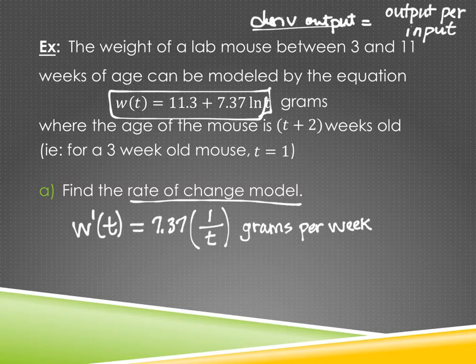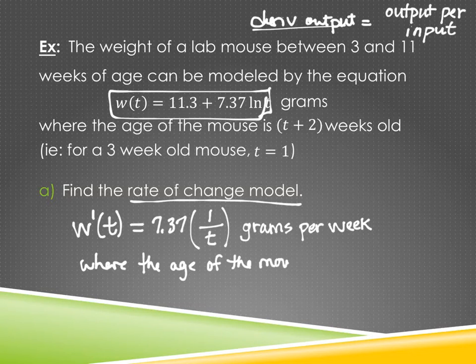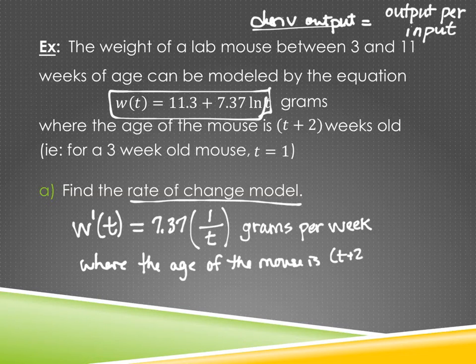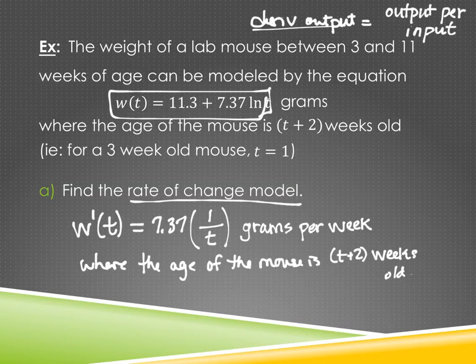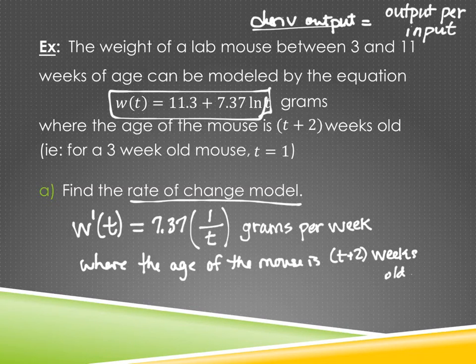And then we have to say the same thing that we already said. That part doesn't change. That's kind of the cool thing is whatever it said next will just be repeated. What did it say? Where the age of the mouse is T plus 2 weeks old. And hearkening back to what we did last time with graphs, remember I told you that whatever the output or the input looked like on the graph, whatever your X values were, they were also going to be on your derivative graph. The same thing's going on here. Your input, your units and everything, all the values stay the same on your X values. So the notation, the language, the units will all stay the same on your description of them as well. Okay, they don't change in the graph. They don't change in the function notation. This is the rate of change model.